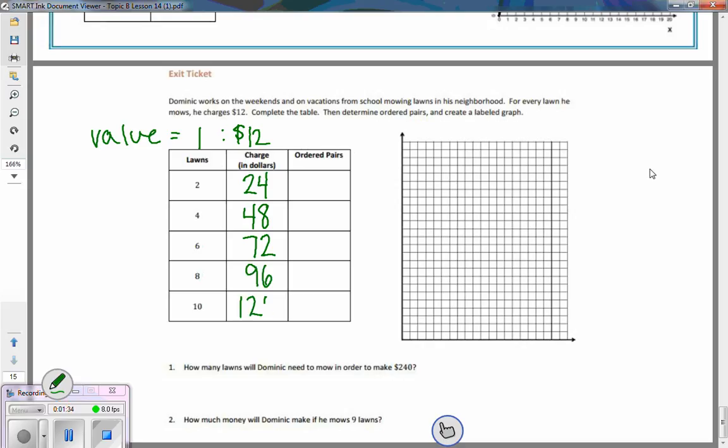To move on to change our lawns into ordered pairs, we took the XY coordinates. In this case our X is going to be the lawns and the Y is going to be the dollars. So here our ordered pair is 2, 24.